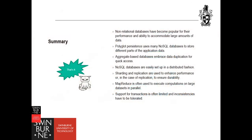In summary: non-relational databases have become popular for their performance and ability to accommodate large amounts of data. Polyglot persistence uses many NoSQL databases to store different parts of application data. Aggregate-based designs embrace data duplication for quick access. NoSQL databases are easily set up in a distributed fashion. Sharding and replication are used to enhance performance — and in the case of replication, to ensure durability. MapReduce is often used to execute computations on large datasets in parallel. Support for transactions is often limited and inconsistency has to be tolerated.